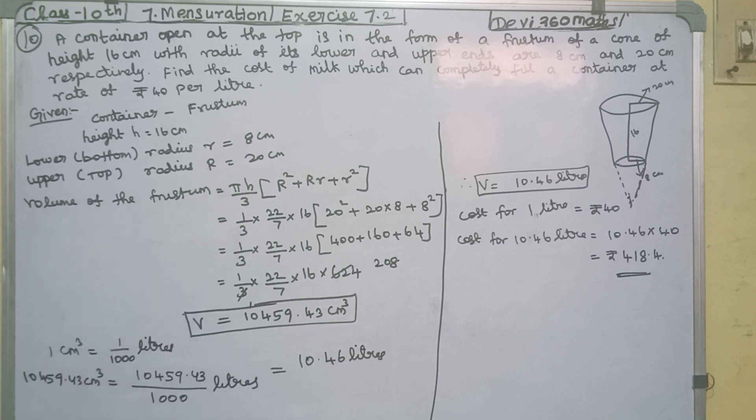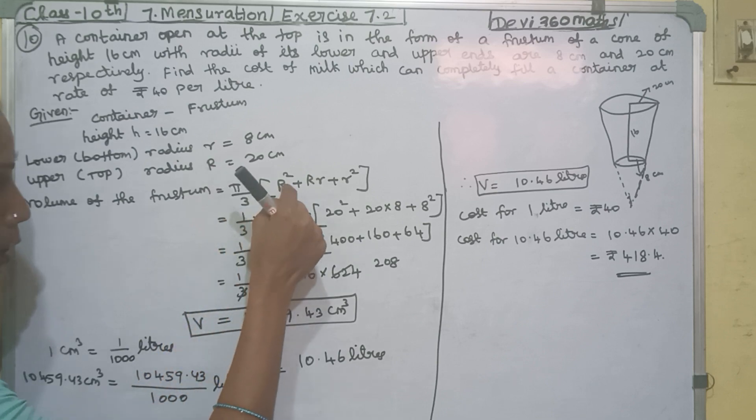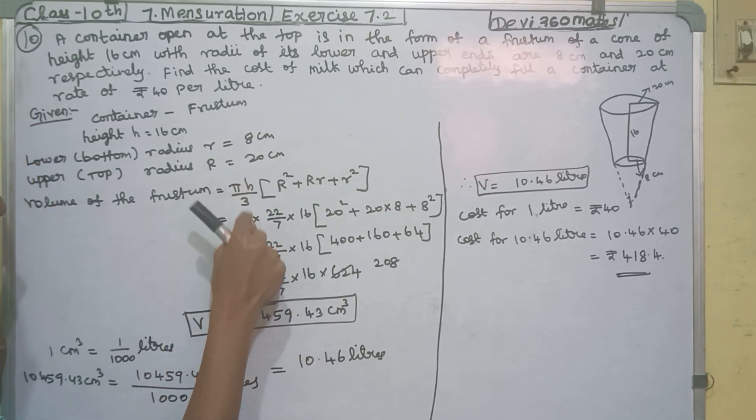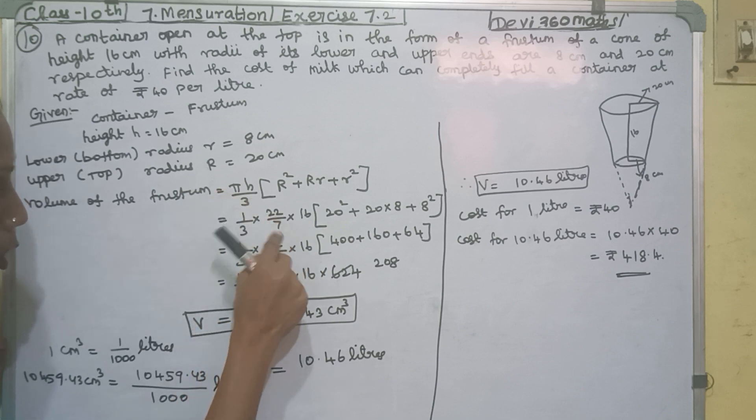The volume of the frustum is the formula: pi h by 3 into (r² plus capital R into r plus capital R²).